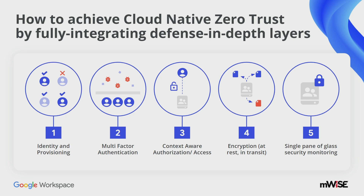Tying it all together, a true productive collaboration solution should have zero trust embedded within it across every user touchpoint. Right from when the user logs in — identity and provisioning with multi-factor authorization using a security key — we've seen very low probability of phishing or stolen credentials. Context-aware access adds another layer of contextual parameters like IP address and the device they log in from, so you could block access if someone is on vacation.